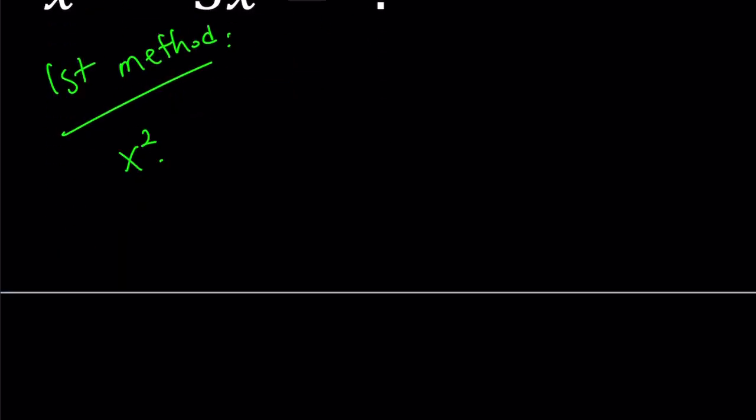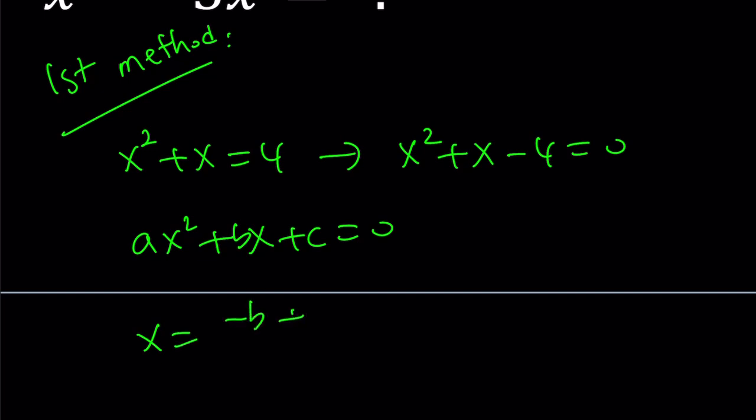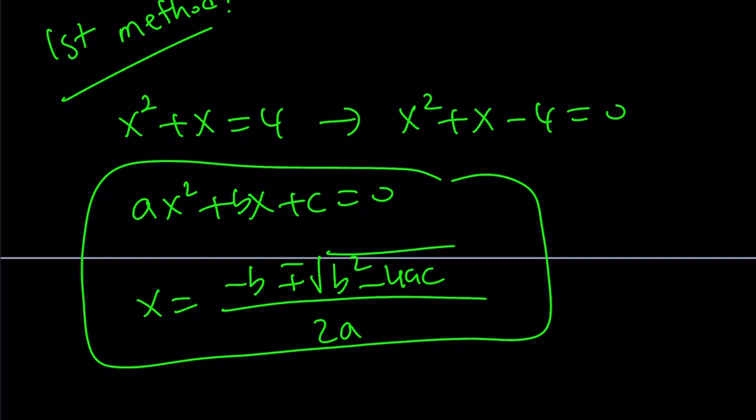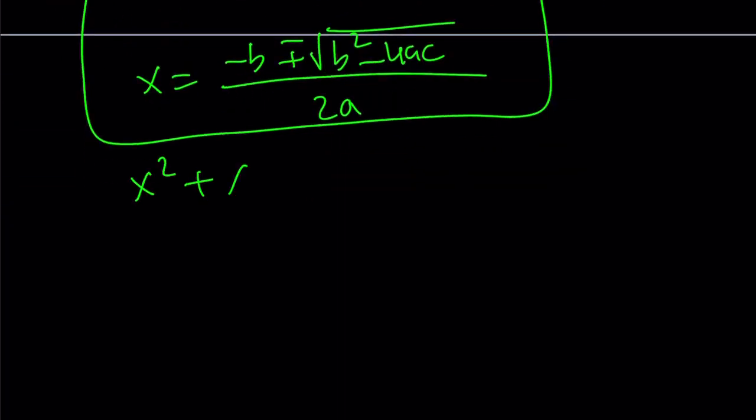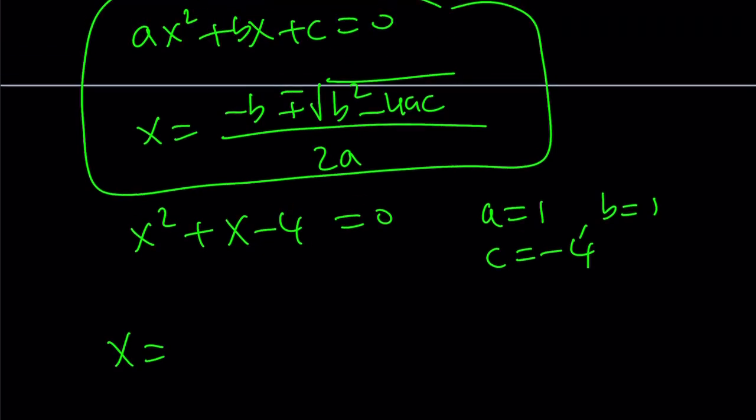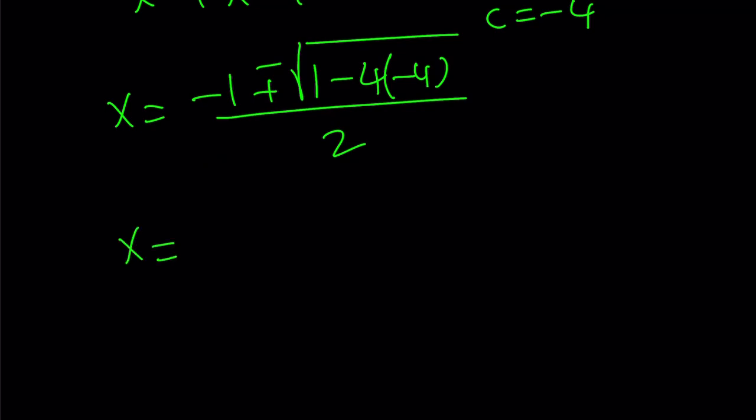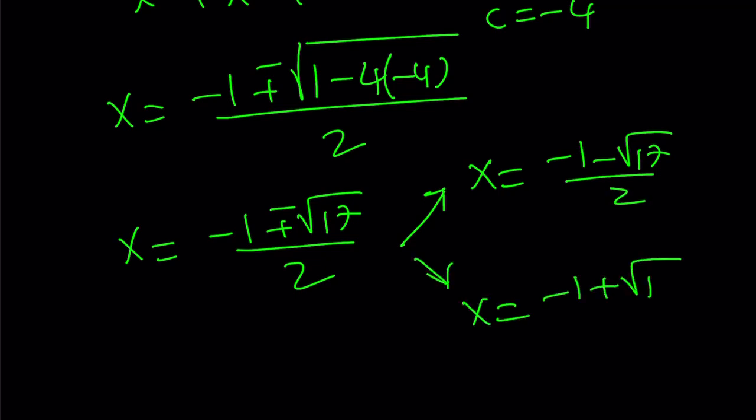For my first method, I'm going to turn this into a quadratic equation. Let's subtract 4 from both sides. For quadratic equations like this one, we have the quadratic formula. If we apply that to our equation, notice that a equals 1, b equals 1, and c equals negative 4. So x becomes negative 1 plus or minus the square root of 1 minus 4 times negative 4, which becomes square root of 17 over 2. There are two x values: negative 1 minus root 17 over 2, and negative 1 plus root 17 over 2.